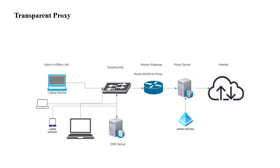Next is transparent proxy. As the name indicates, it is transparent to users — no proxy configuration is required on the user machine. The user machine is connected to the office switch and has direct access to the DNS server. When a user initiates a web page access, for example example.com, it goes to the DNS server and gets the public IP. The user machine then initiates traffic on port 80 or 443. When this request lands on the router, it may have a policy-based routing rule to forward all port 80 and 443 traffic to the proxy server as the next hop. The proxy server validates the user and determines whether access should be allowed or blocked based on the policy set.